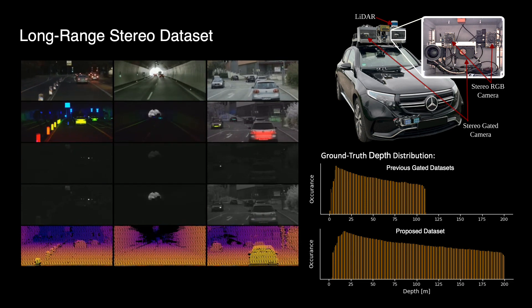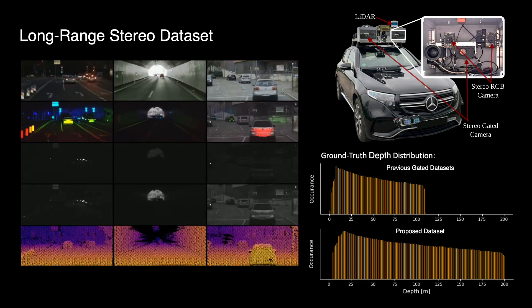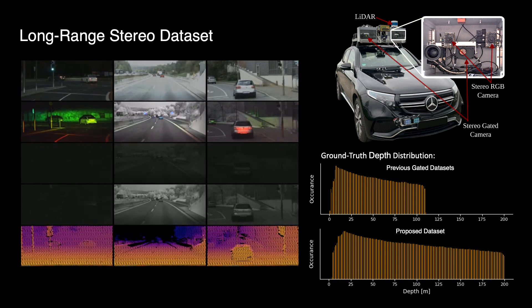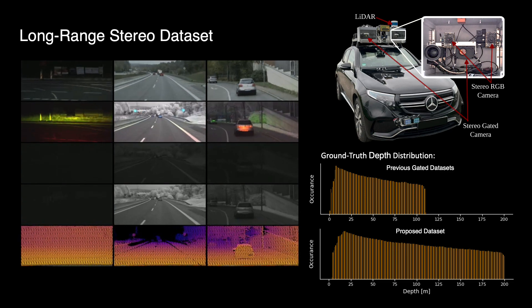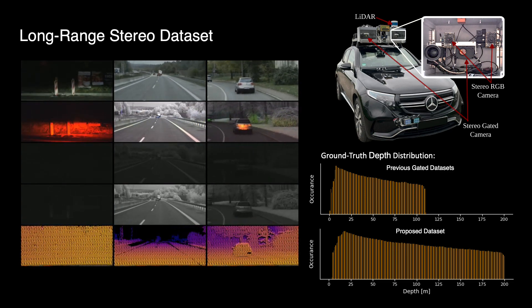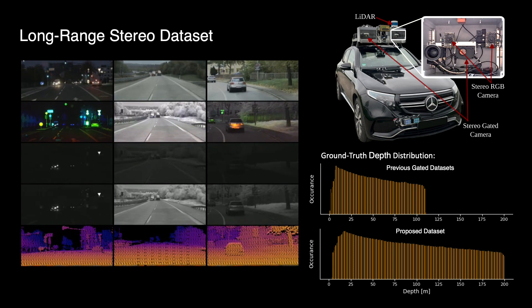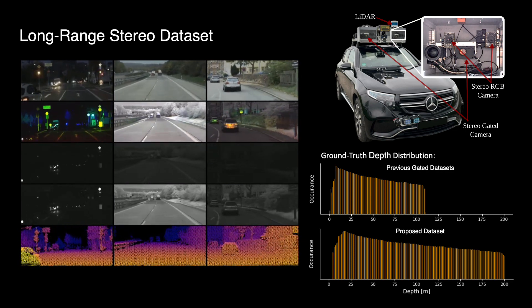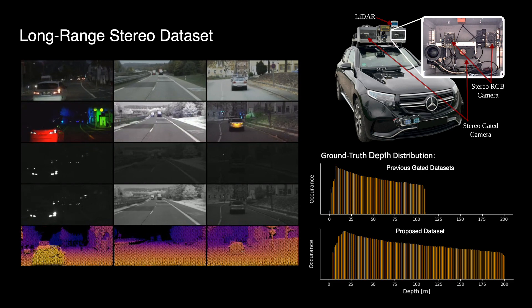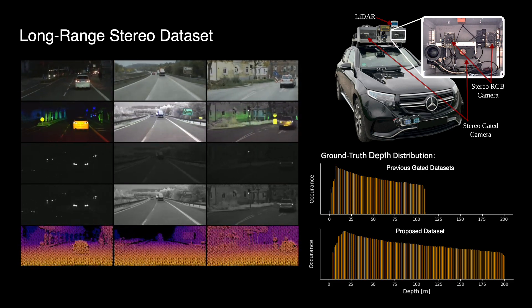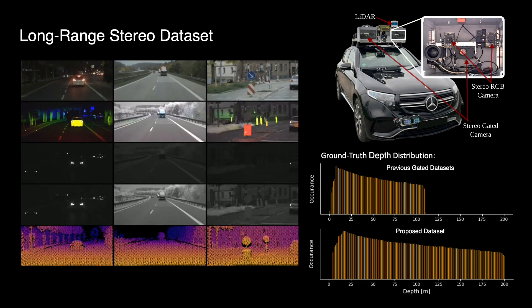To train and evaluate the proposed method, we captured the gated stereo dataset during a data collection campaign covering more than 1,000 km of driving. We have equipped a test vehicle with a long-range lidar system for ground truth depth up to 200 m, an automotive RGB stereo camera, and a NIR gated stereo camera setup with synchronization. The dataset contains around 100,000 samples in daytime, nighttime and varying weather conditions.